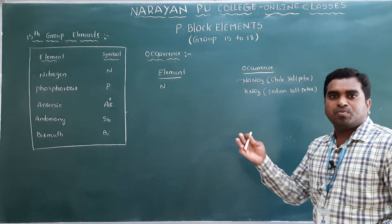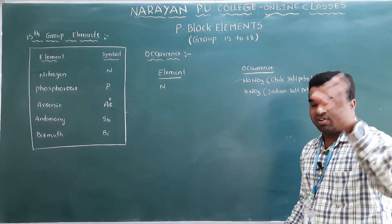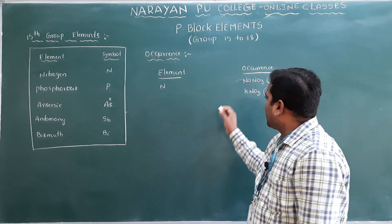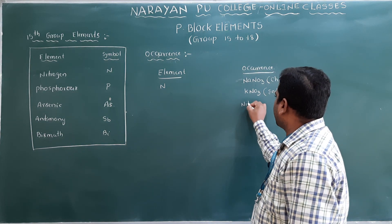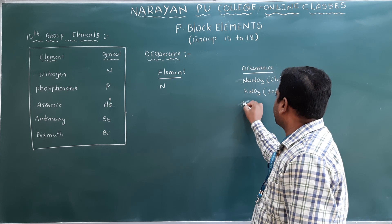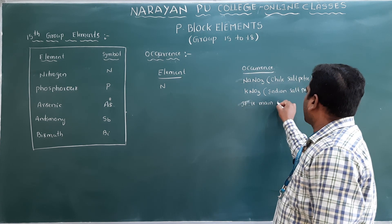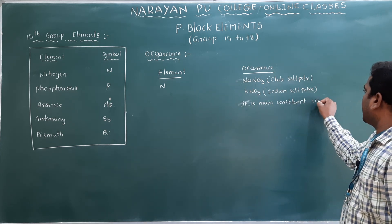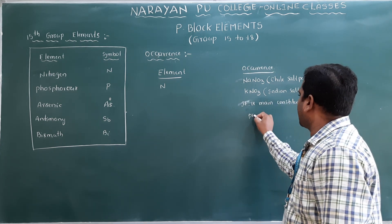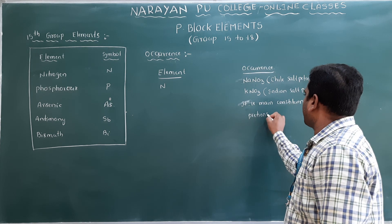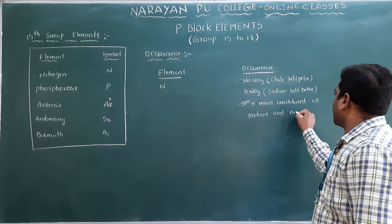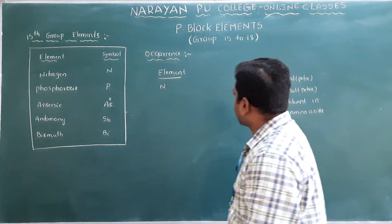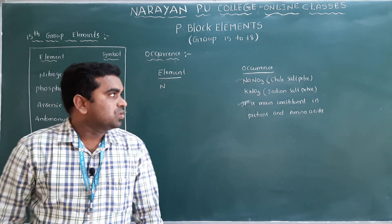Nitrogen is also the main constituent in proteins and amino acids. In the atmosphere, nitrogen is almost 78 percent by volume and about 80 percent by mass. Now let us make a table with element and occurrence. For nitrogen: it occurs in the earth's crust in the form of nitrates - sodium nitrate and potassium nitrate.